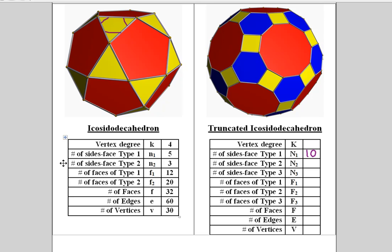The type 2 faces on the left-hand side are the three-sided triangles. They become the type 2 faces on the right-hand figure, which are the hexagons.